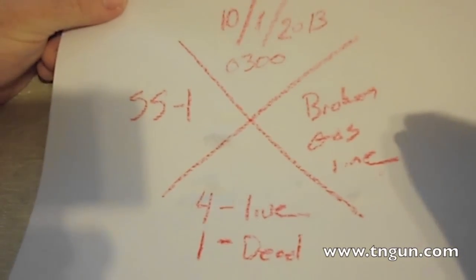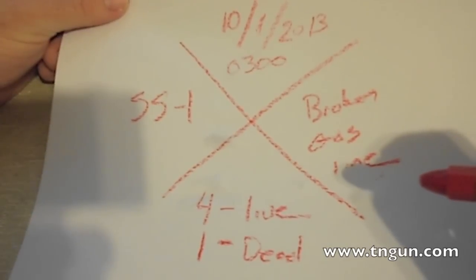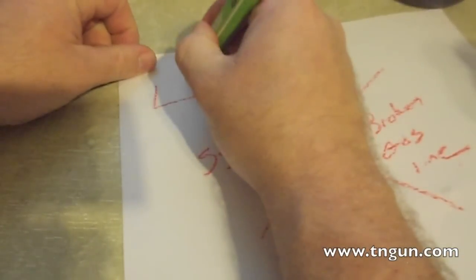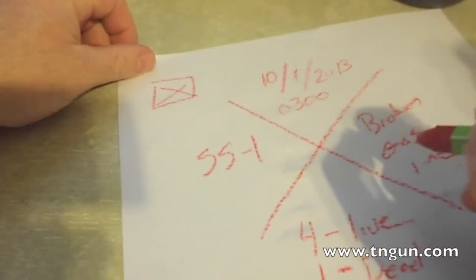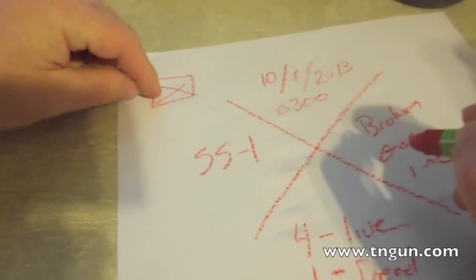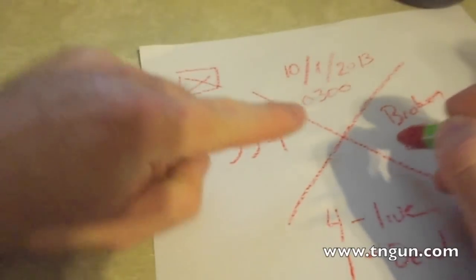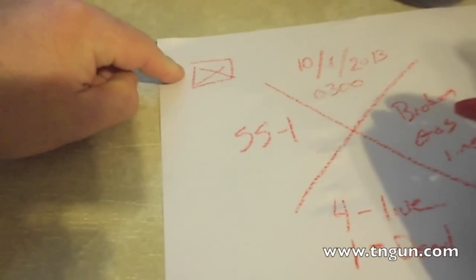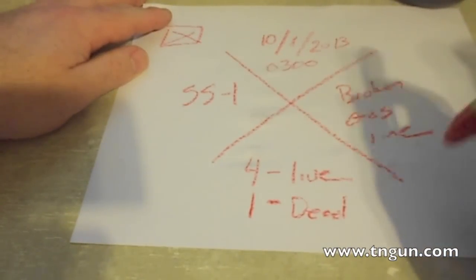Now this isn't the only thing out there. There are other methods, and there's a box method that code officials use for building safety. So if you see this, this might not mean this—this might be whether the house is condemned or not, whether it's safe to go in. It pays to know the different markings, but if you see this, this is basically what FEMA does.